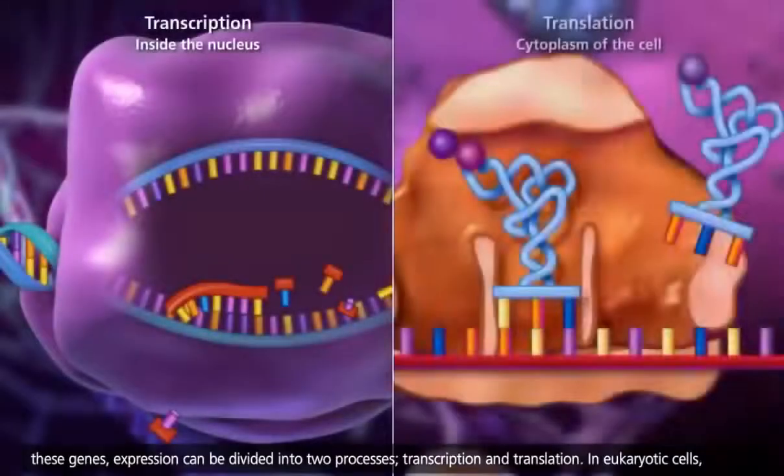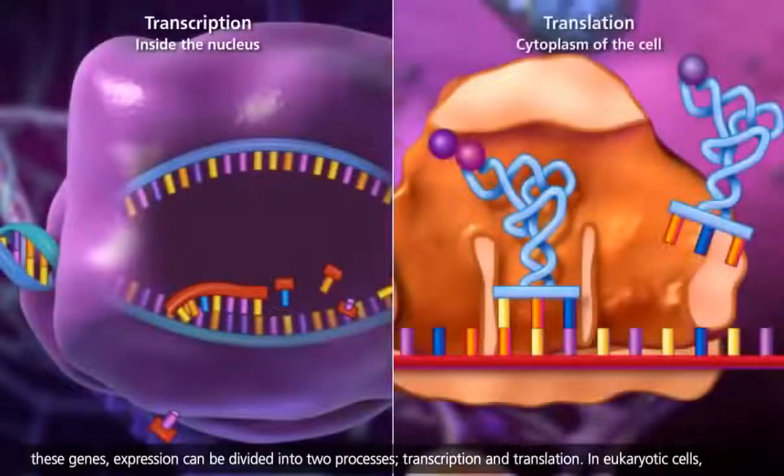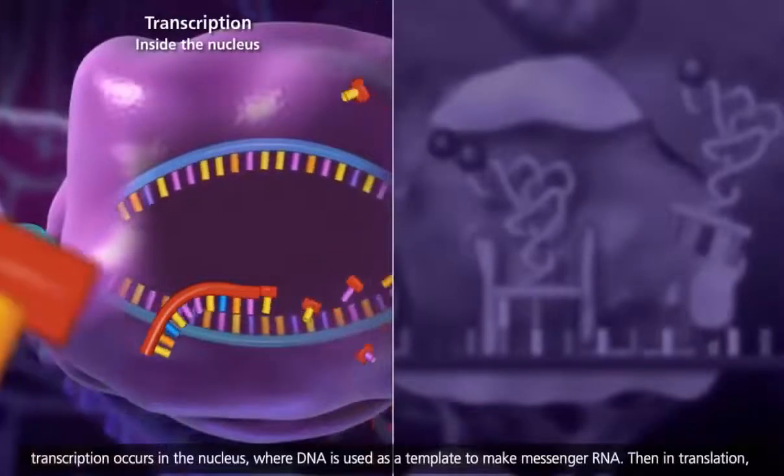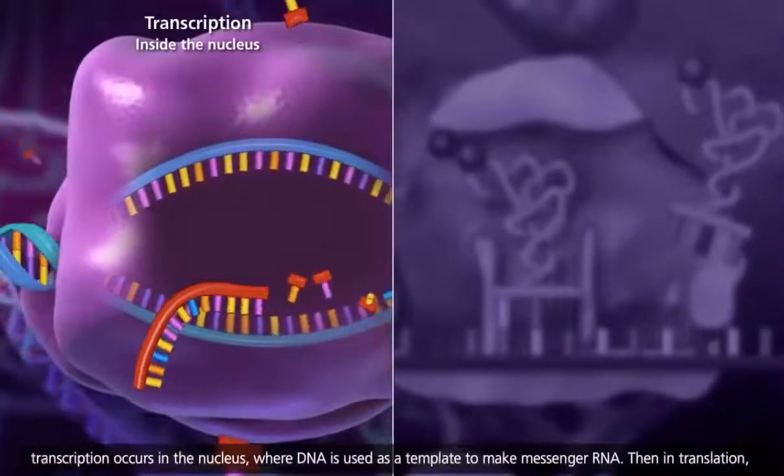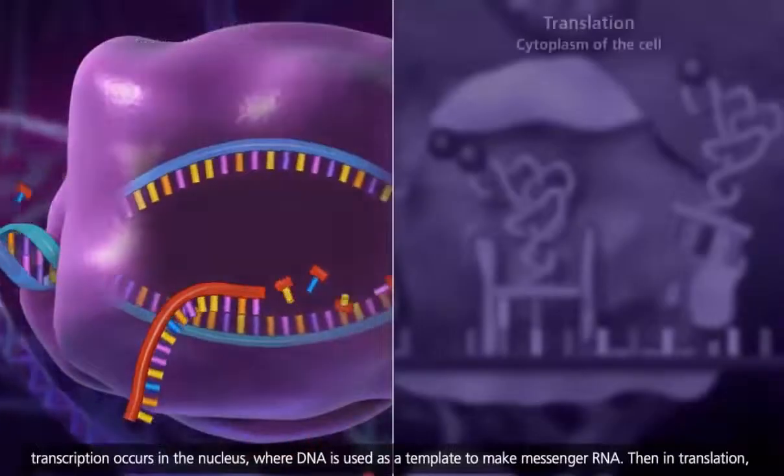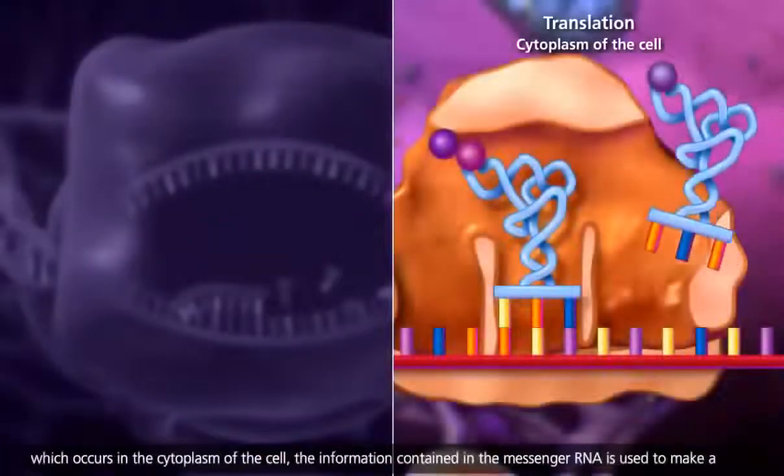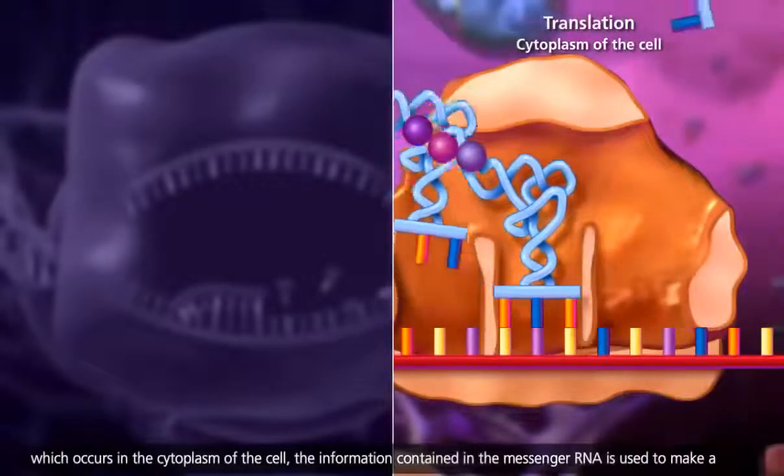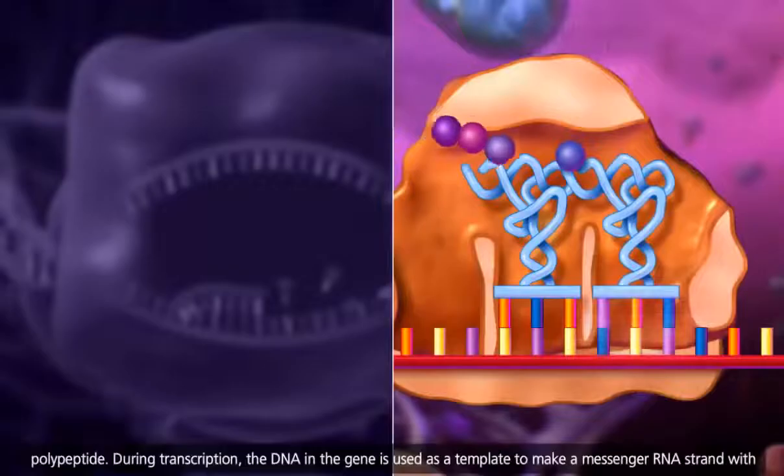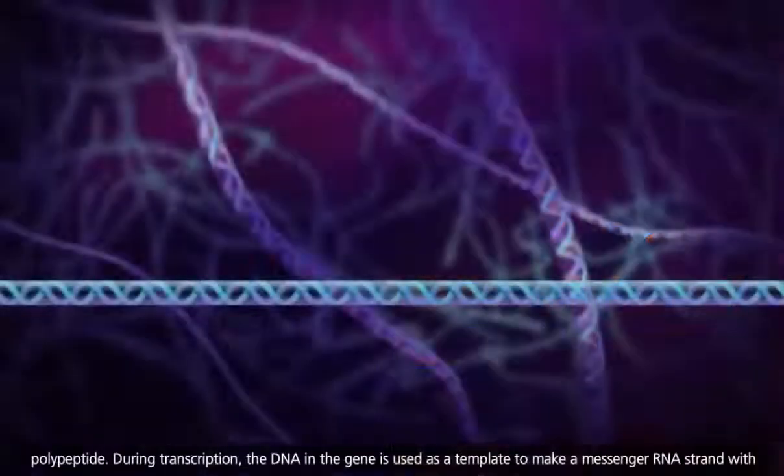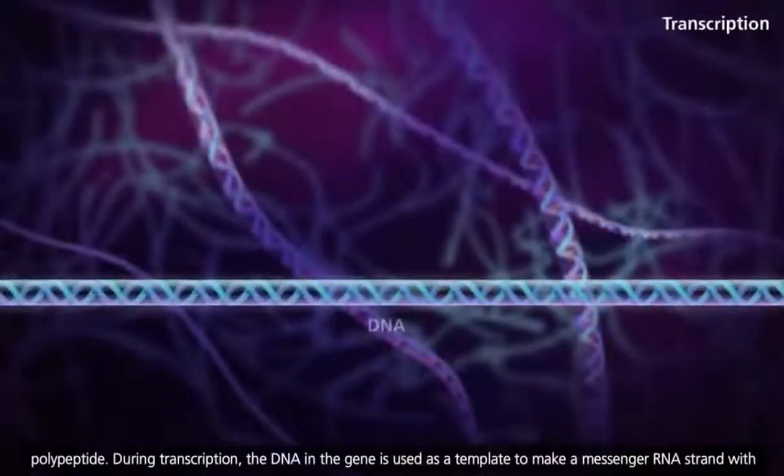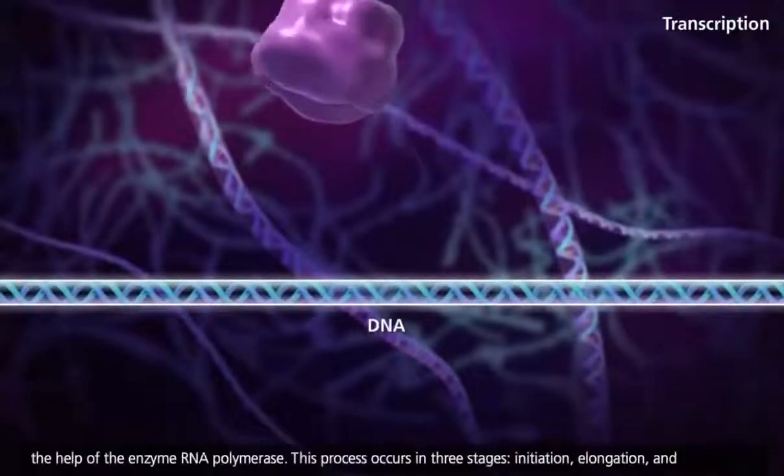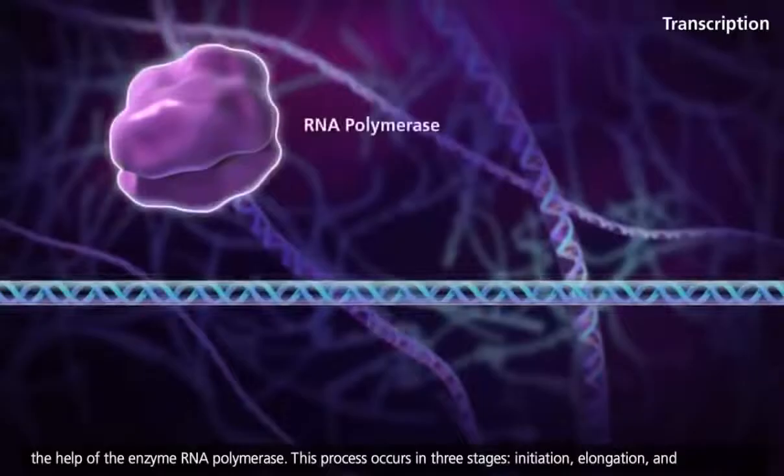Transcription and translation. In eukaryotic cells, transcription occurs in the nucleus, where DNA is used as a template to make messenger RNA. Then in translation, which occurs in the cytoplasm of the cell, the information contained in the messenger RNA is used to make a polypeptide. During transcription, the DNA in the gene is used as a template to make a messenger RNA strand with the help of the enzyme RNA polymerase.